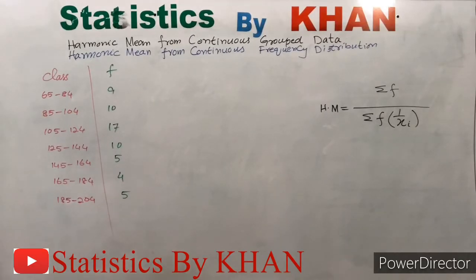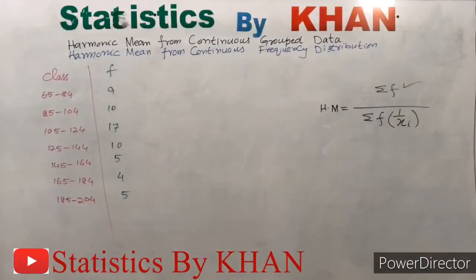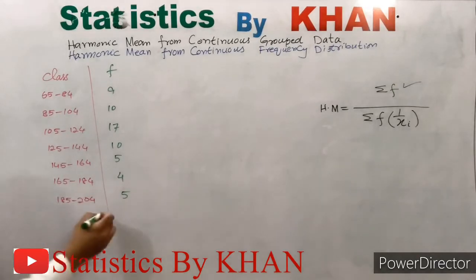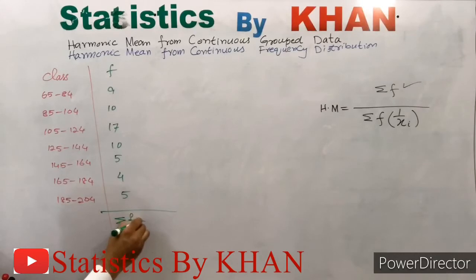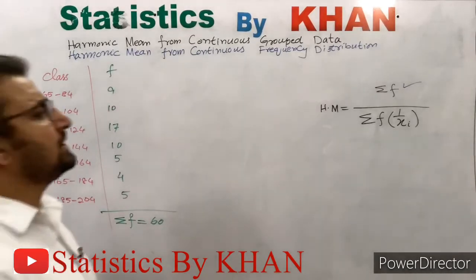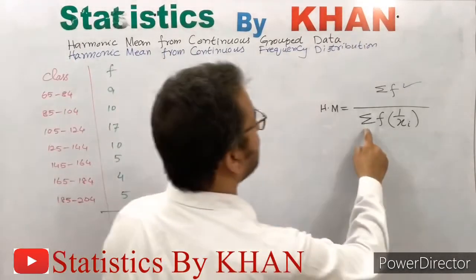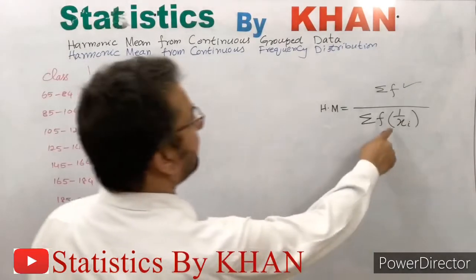Focusing on the formula, we need Σf in the numerator. Σf is the total of the frequency column. If we total this column, it gives us Σf, which is equal to 60. So the value of Σf is 60. In the denominator, we need Σf·(1/xi).